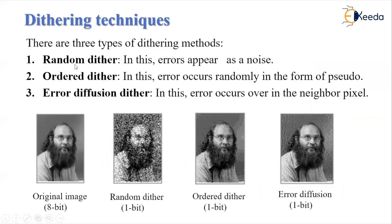There are three types of dithering methods. First is the random ditherer — in this, error appears as noise. Suppose this is the original 8-bit image; if we apply random dither, the image will have a lot of noise. Next is the ordered dither — in this, error occurs randomly in the form of pseudo noise. Third is the error diffusion dither — in this, error occurs over the neighboring pixels, so neighboring pixels get disturbed. This is the original image and these are the different dithering methods.